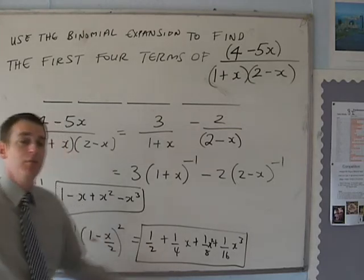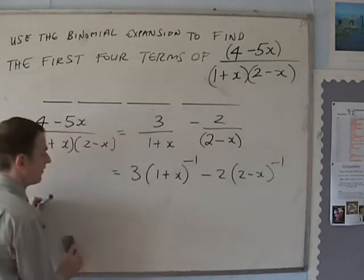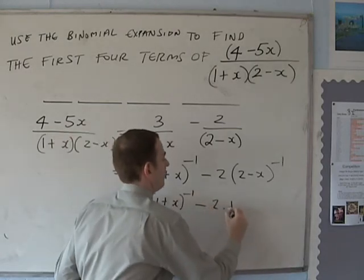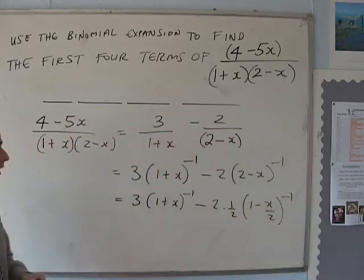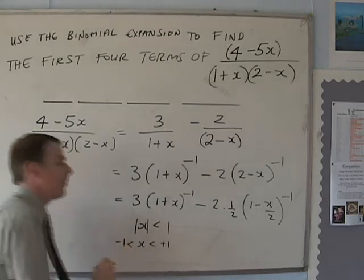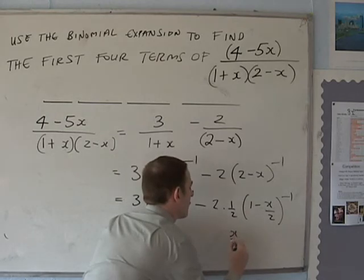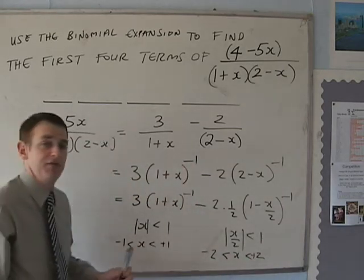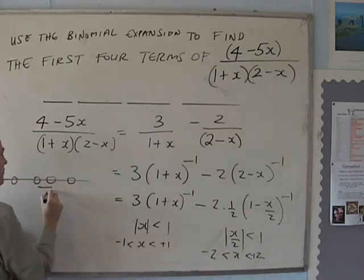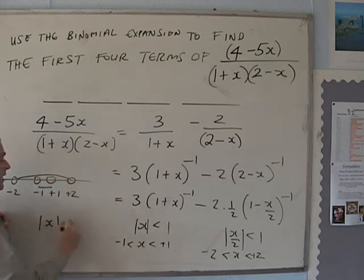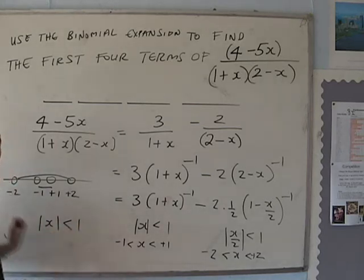What is this valid for? It needs to be valid for both expansions. The (1 + x)^(−1) expansion is valid for |x| < 1, so x is between −1 and +1. The (1 − x/2)^(−1) expansion is valid for |x/2| < 1, so x is between −2 and +2. Since it must be valid for both, we take the intersection — it is valid only when |x| < 1, i.e., x is smaller than +1 and greater than −1.